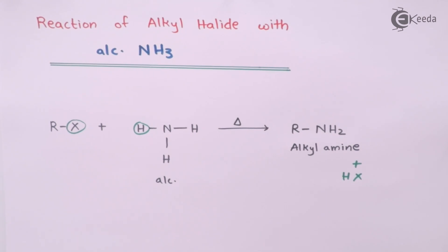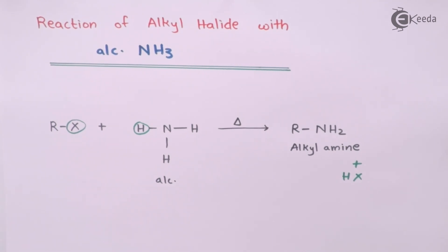This is the general reaction when one mole of alkyl halide is treated with one mole of ammonia. However, this reaction can also continue further, because ammonia has three hydrogen atoms, all of which are capable of undergoing substitution. Three alkyl groups can replace the hydrogen atoms of ammonia, and even a quaternary ammonium salt can be formed.